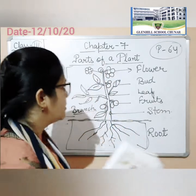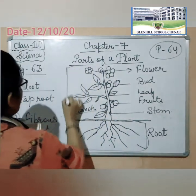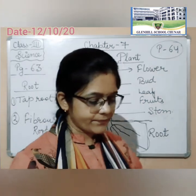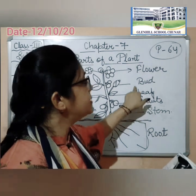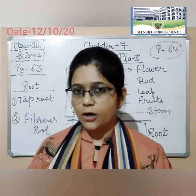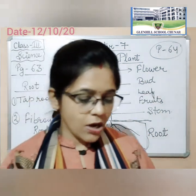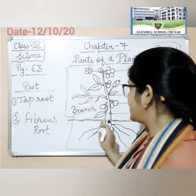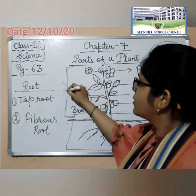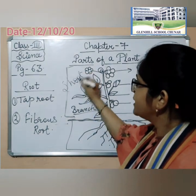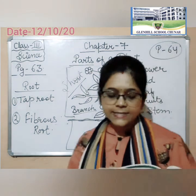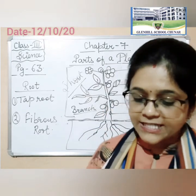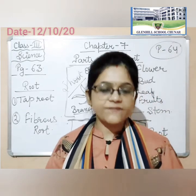Now come to the shoot. This one is shoot. About the shoot system — shoot system mein kya kya aata hai? Stem, fruits, leaf, bud, flower — these five parts are of the shoot system. The part of the plant above the soil is known as shoot. The shoot of the plant bears the stem, its branches, leaves, buds, flowers and fruits.